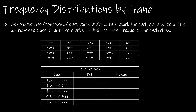Now that we have our class width and lower and upper boundaries, we'll make the frequency distribution by hand. Since our array is already ordered, 1595 and 1599 fall in the first class — that's 2 values. The second class has 5, the third has 4, the fourth has 5, and the fifth has 4. Typically we would have an unordered array and the tally process would be more important, but here we could skip tallies and count directly since the data is already sorted.